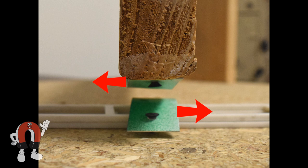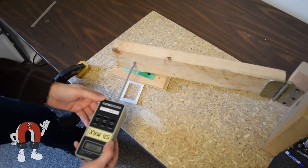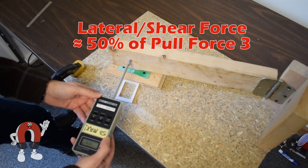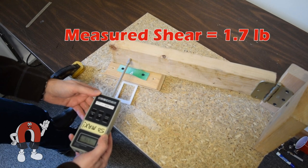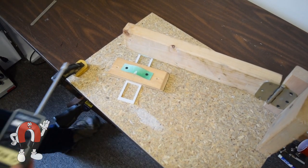However, we want to know the lateral or shearing force required to push the magnets apart sideways. We usually estimate it to be around half of the magnet to magnet pull force. When we test this with a pull force gauge, we measure around 1.7 pounds, which is very close to our estimate.